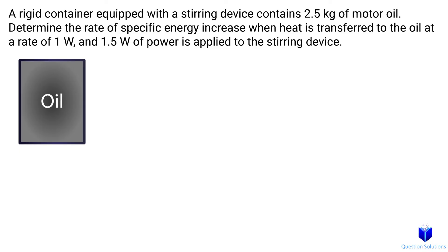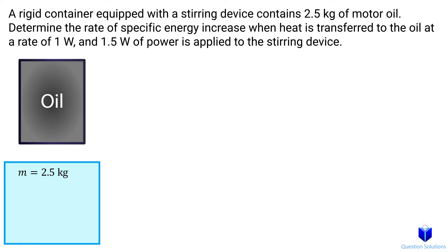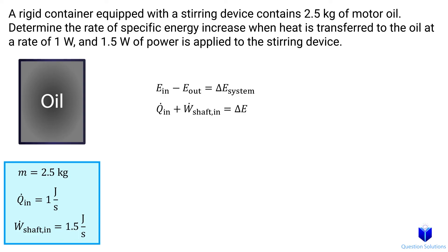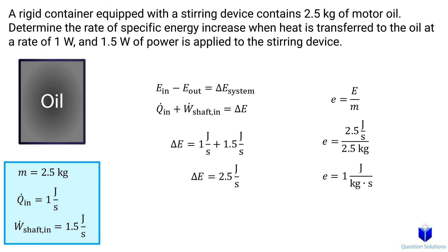Let's take a look at this question where we have a container filled with motor oil. There is a stirring device inside supplied with 1.5 watts of power, and heat is also supplied. We need to figure out the specific energy increase. The container has 2.5 kilograms of oil. Heat is transferred at a rate of 1 watt (1 joule per second), and 1.5 watts of shaft power is applied to the stirring device. The energy in minus the energy out equals the change in energy of the system. We have two energy inputs — heat and shaft power — with no energy loss. Let's plug in our values. Since the question wants the specific energy increase, we divide by the mass, and that's our answer.